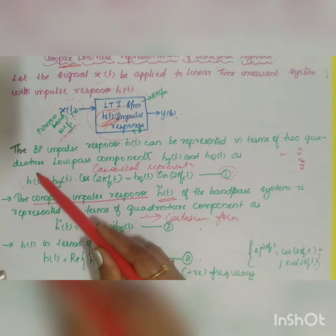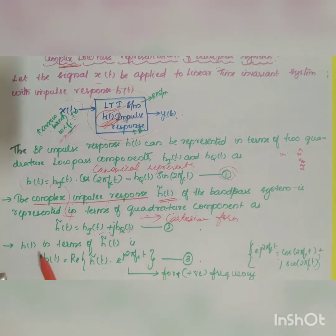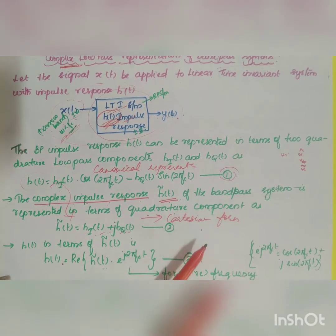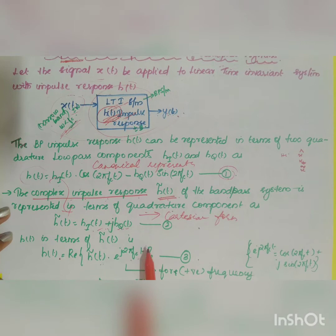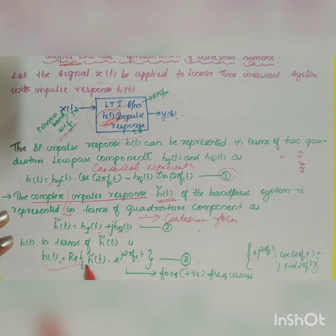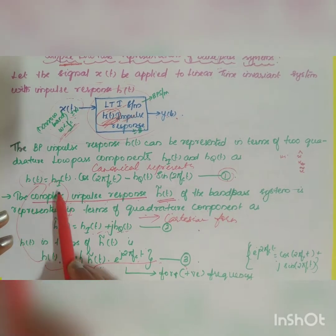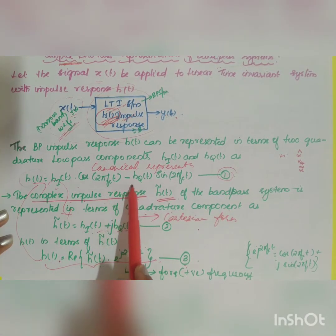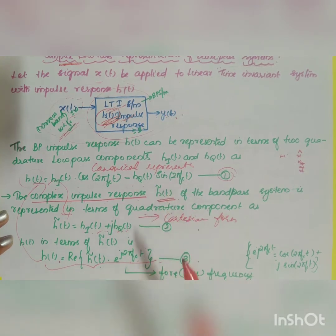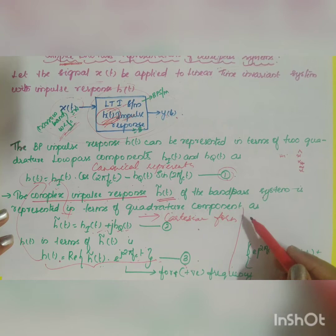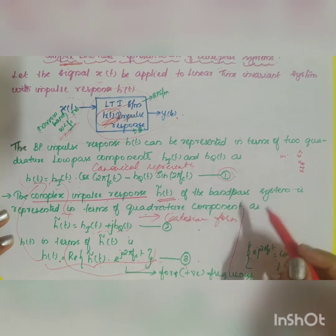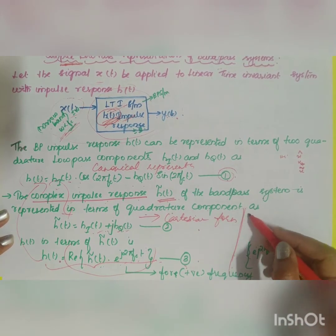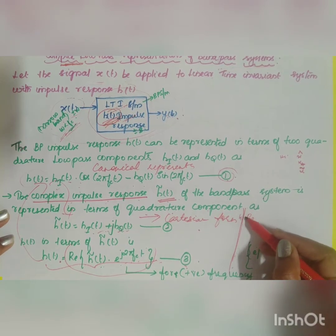Now we are going to represent h(t) in terms of h̃(t). We can write that h(t) is equal to the real part of h̃(t)·e^(j2πfct). That is taken as Equation 3. The reason we write it this way is that h(t) = h_i(t)·cos(2πfct) − h_q(t)·sin(2πfct), and substituting gives us the value in terms of the real part of h̃(t)·e^(j2πfct).